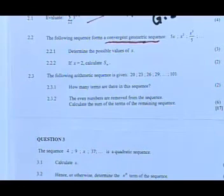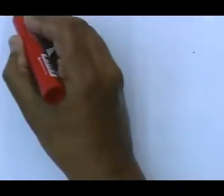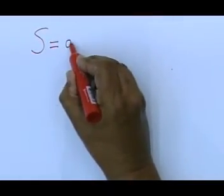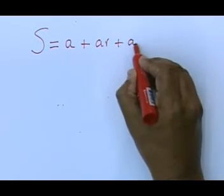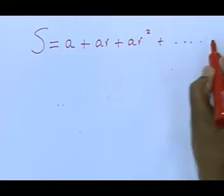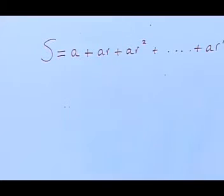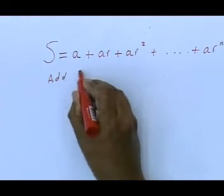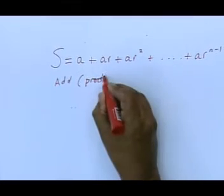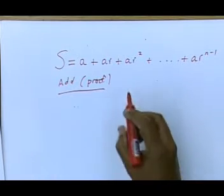When we think of a geometric sequence and the sum of terms, let's write it out in general. If you have the sum of terms, first term a plus ar plus ar to the power 2, and you continue like that until you get to the nth term, the last term in that sequence. If you add that, I'm going to give you a little hint.